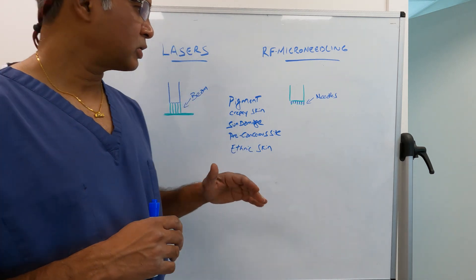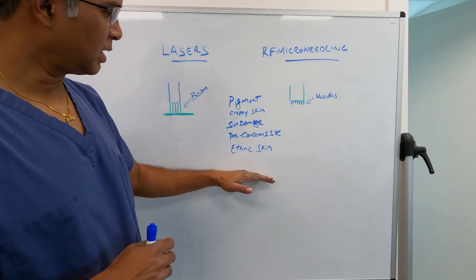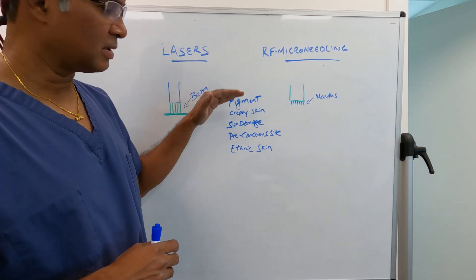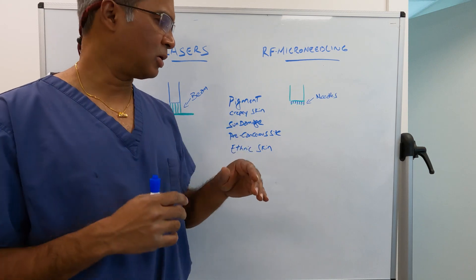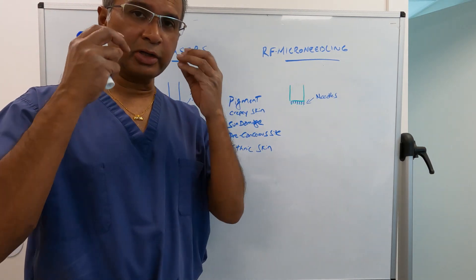Let's take these conditions that I wrote up. You have pigment that exists in the skin, crepey skin maybe under the eyes, around the mouth, vertical lines. There's a lot of sun damage.